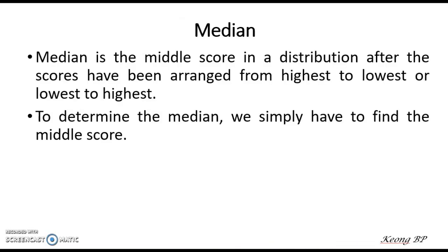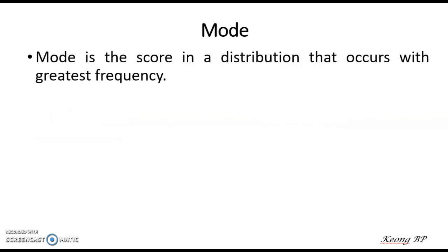Now let us look at what is meant by median. The median is the middle score in a distribution after the scores have been arranged from highest to lowest or lowest to highest. To determine the median, we simply have to find the middle score. And now let us look at what is meant by mode. Mode is the score in a distribution that occurs with the greatest frequency.